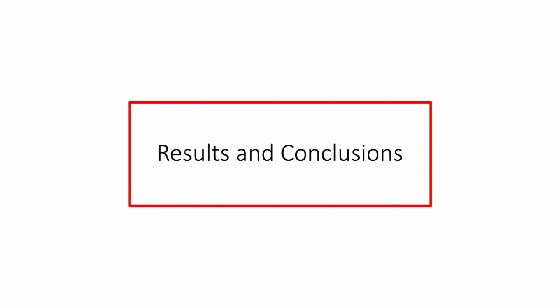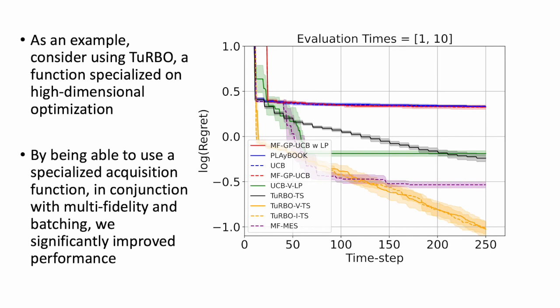To highlight the benefits of our approach, we use a high-dimensional example: a plot of regret against number of iterations for the 40-dimensional Ackley function. Turbo is a Bayesian optimization method specializing in high dimensions by considering local trust regions, which helps avoid over-exploration. We show that by using the specialist acquisition function in conjunction with multi-fidelity and batching, we significantly improve performance. Turbo is clearly the best performer by a significant margin, and state-of-the-art batching multi-fidelity methods such as multi-fidelity max entropy search still obtain good performance, but without the specialist acquisition function, performance is much worse.